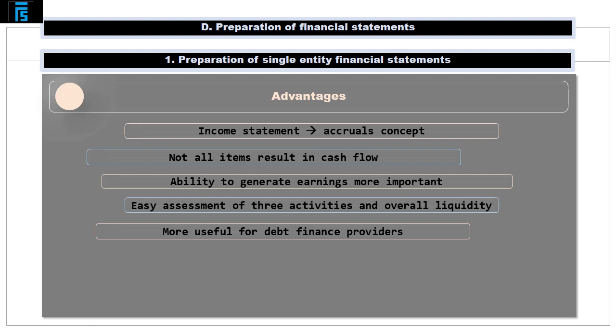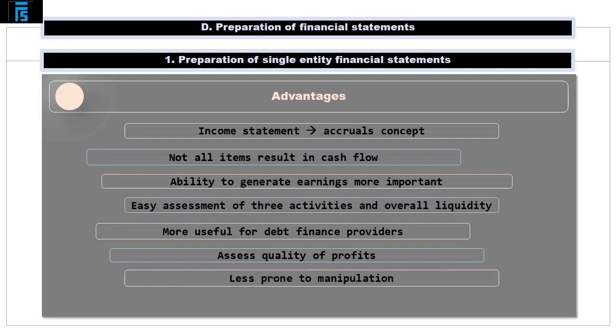Furthermore, the statement of cash flows may be used to assess the quality of profits generated — to see what proportion of those profits actually turn into cash. And finally, the statement of cash flows is much less prone to manipulation or subjective judgment and is not easily affected by accounting policy choices made by the reporting entity.